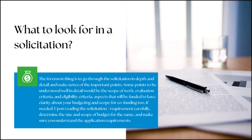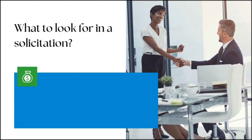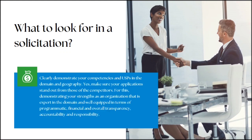Secondly, review and understand the evaluation criteria and their order of importance as listed in the solicitation. Some of the criteria may include technical expertise, staffing, experience and capabilities, and past projects and successes. Only apply if you are eligible for the RFA or RFP. While reviewing the solicitation, if any aspect is not clear, ask your questions well in time, in writing, and in a concise and clear manner. The next step is to clearly demonstrate your competencies and unique strengths in the domain and geography.